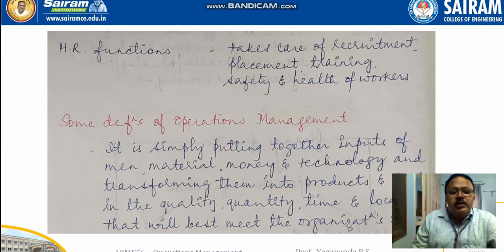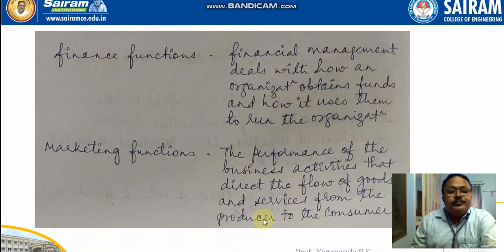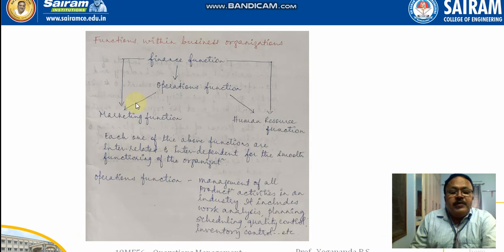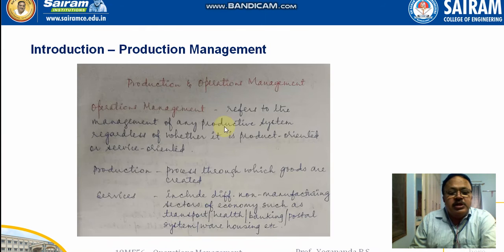The HR function takes care of recruitment, placement, training, safety, and health of workers. So these are the different functions within the organization: finance functions, operations functions, marketing functions, and human resource functions.